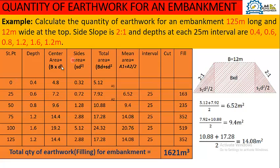We will use a table format for the calculation of quantity of earthwork for an embankment. In the first column we have station points starting from 0 up to 125 meters, which is the total length of the embankment. At 0 the depth is 0.4, at 25 meters it's 0.6, at 50 meters it's 0.8, at 75 meters it's 1.2, at 100 meters it's 1.6, and at 125 meters it's 1.2.